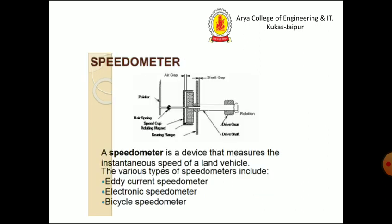A speedometer is a device that measures the instantaneous speed of a land vehicle. The various types of speedometers include addition speedometers, electronic speedometers, and bicycle speedometers.